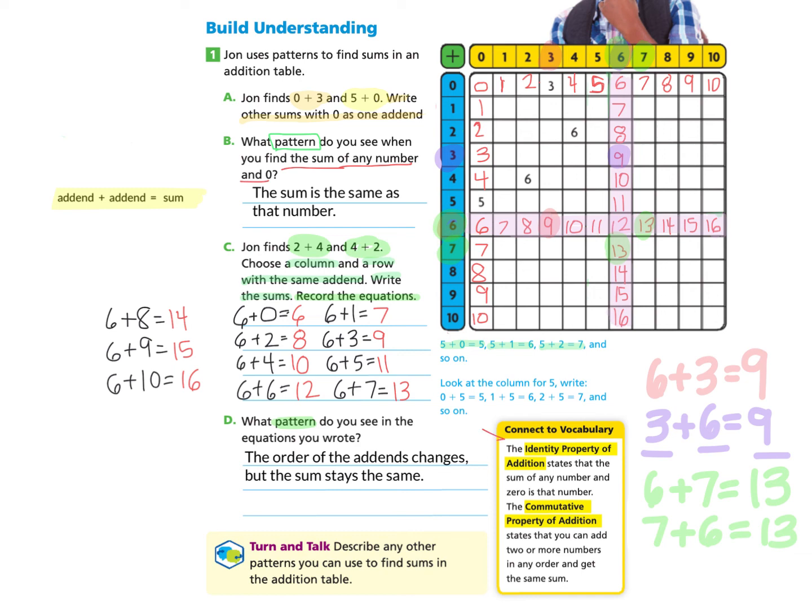Now let's take a look at the Connect to Vocabulary. While working with part B and C and D, we have discovered some properties. The first property is the identity property of addition, and that states that the sum of any number and 0 is that number. And that was the pattern we found here when we were filling in the addition chart with 0 and another addend. We were finding that any time we added 0 and a number, we were always going to get that number. And that is the identity property of addition.